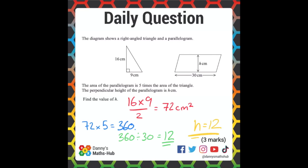Where did the three marks come from? We get one mark for successfully working out the area of the triangle, one mark for successfully working out the area of the parallelogram and knowing that we have to divide it by 30, and then one mark for getting 12.